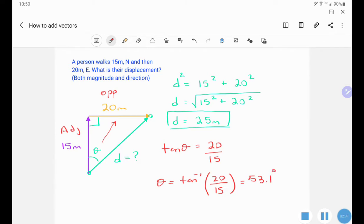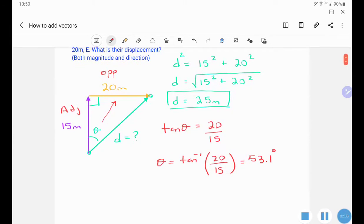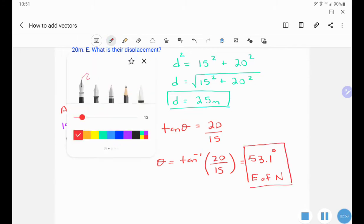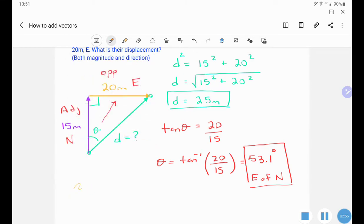The other piece of information that I need is which direction did they move. So they began going north and then they went east. So they are east of north. So here's my direction. So my final vector displacement is equal to 25 meters at 53.1 degrees east of north.